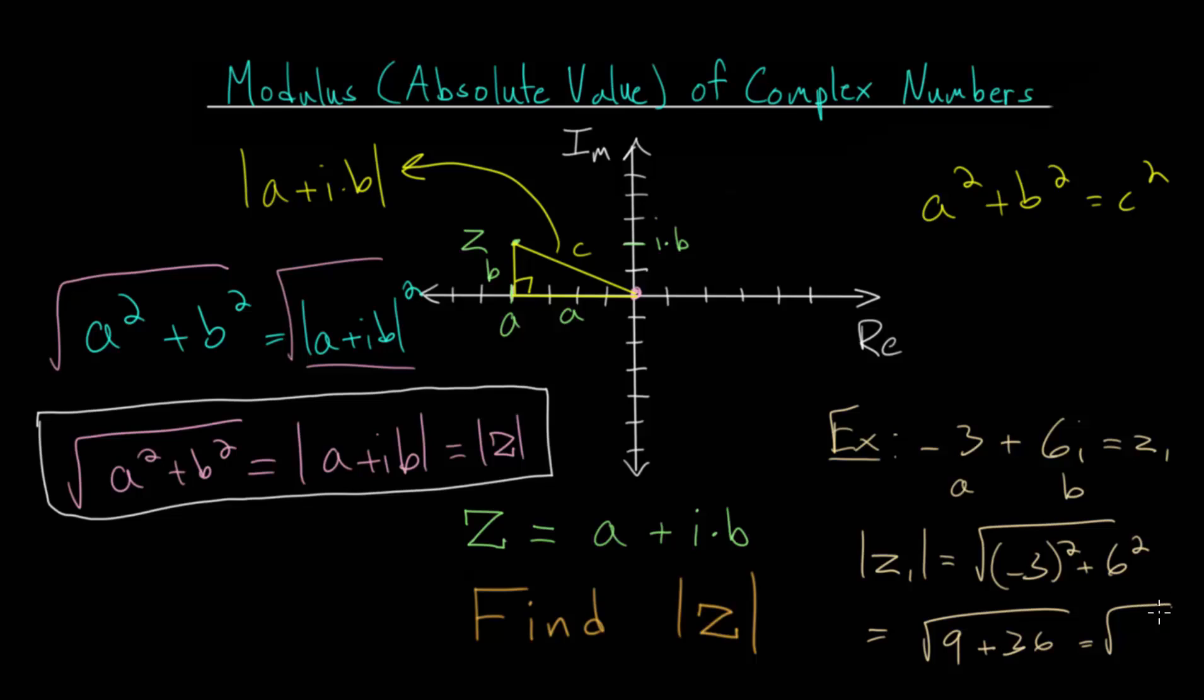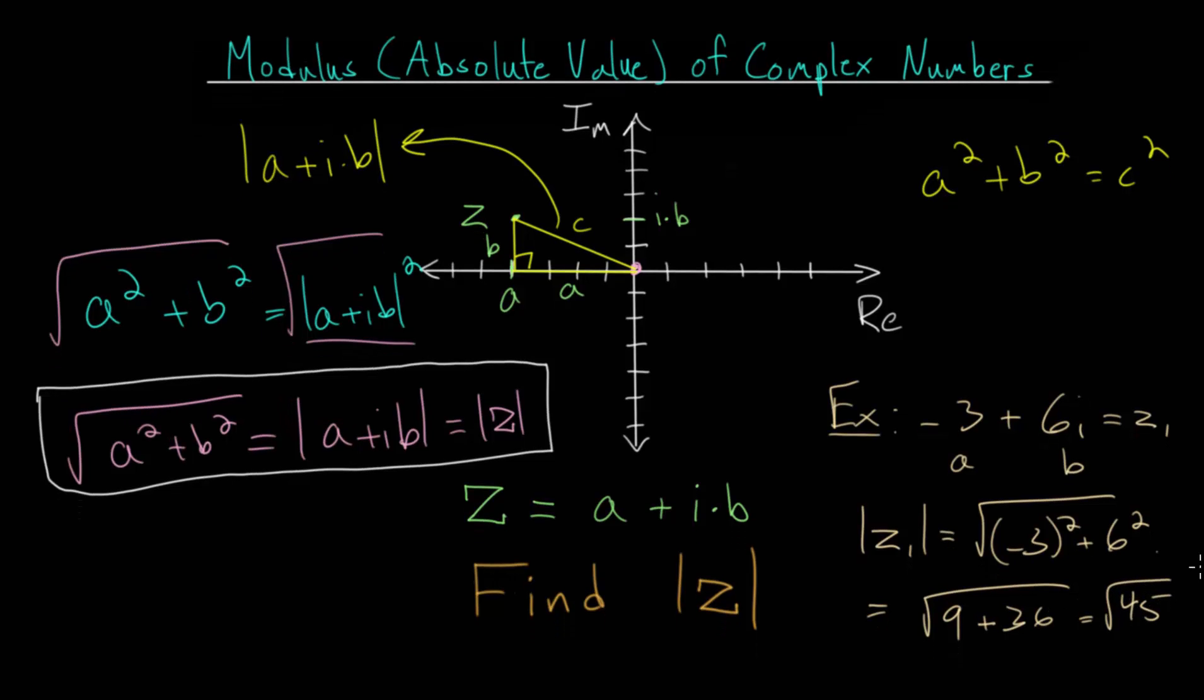Adding these together, we get the square root of 45, which actually can be simplified since this is really just nine times five. And we can take a square root of nine. So if we separate this into a product of square roots, since we have a product on the inside,